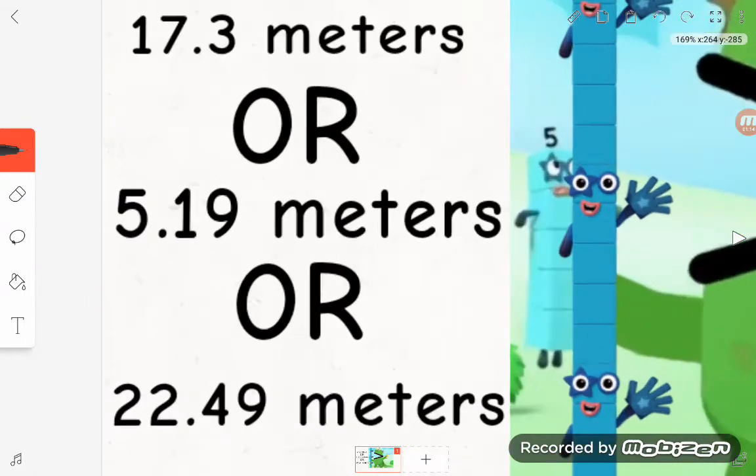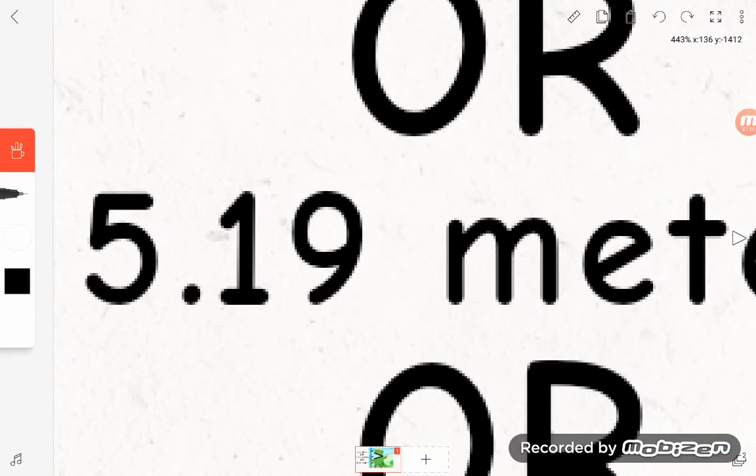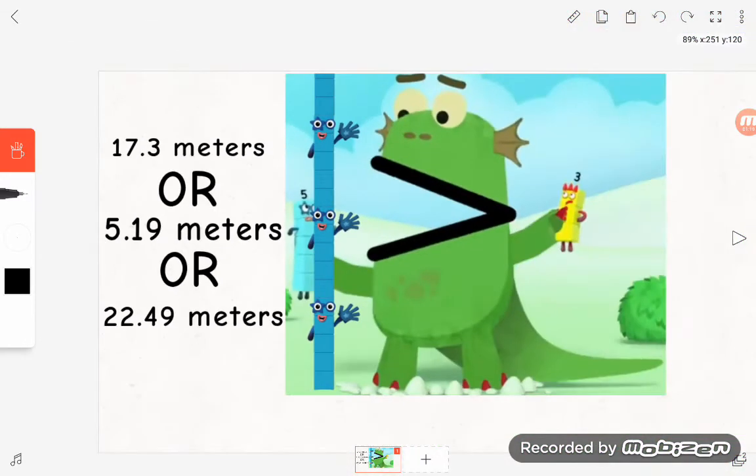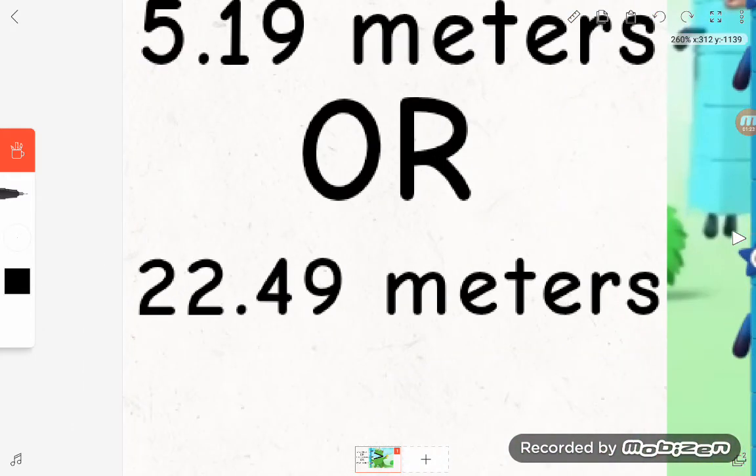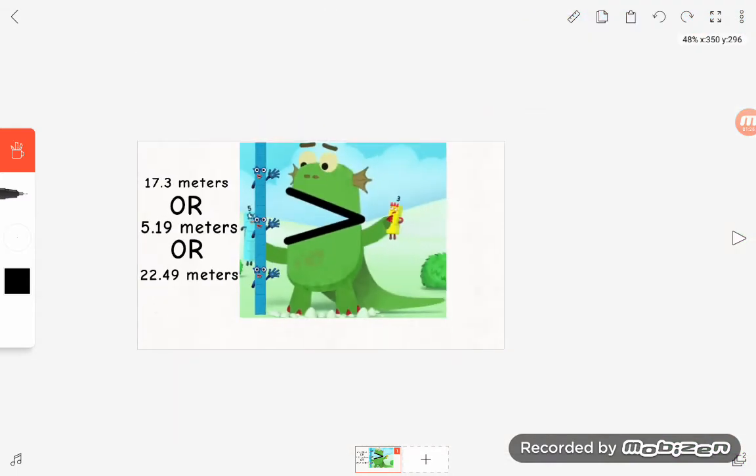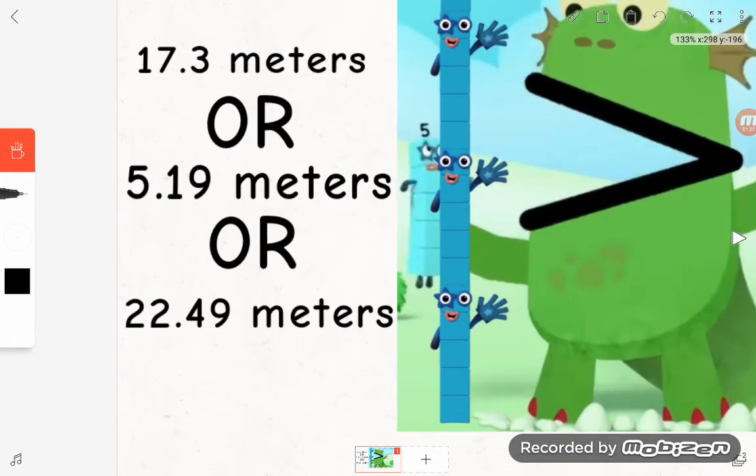So times that and you get 5.92 meters. And if you want to add those numbers, you get 22.49, which is basically 22.5 if you want to do it like that.